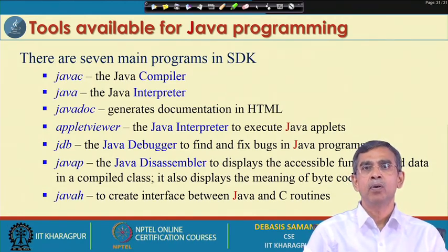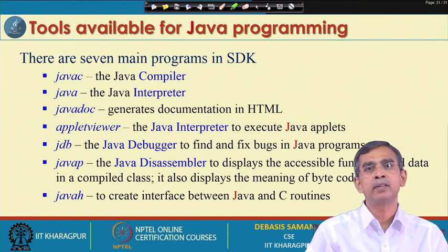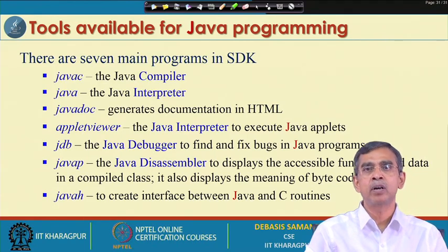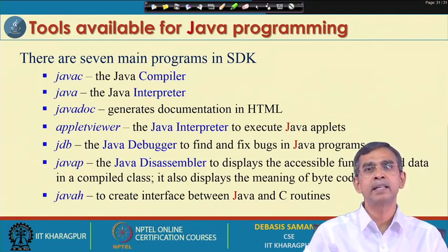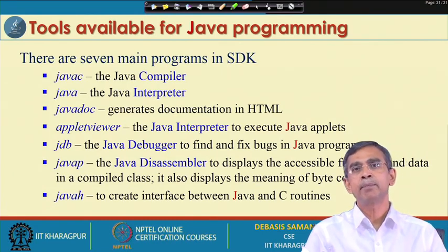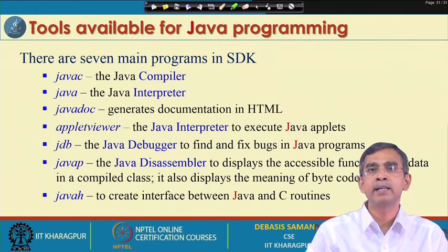Next, let us see what things are there in your JDK tool. JDK is basically a bundle, that means it contains many programs. Here I have listed the programs that are there in JDK. I can say JDK and SDK are both the same things. There are in fact 7 programs. I have already discussed about one program - how to translate a .java file into a .class file - it is called javac.